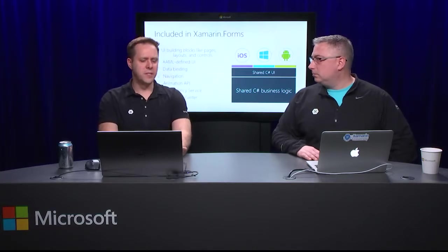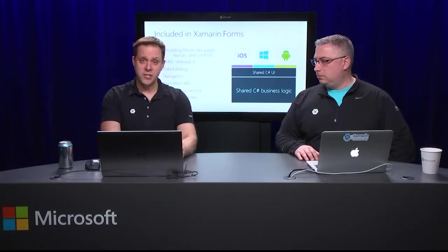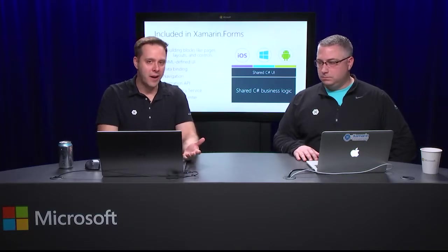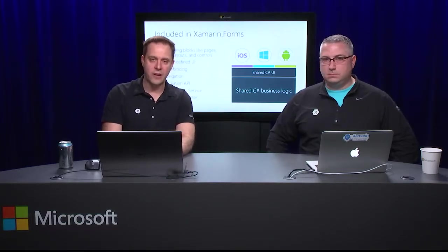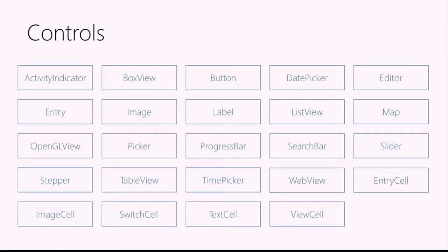XAML gives strong separation of UI definitions from backing logic. It's a language designed for defining UI — that's why we see it in so many Microsoft products. It's a real advantage to have this for both iOS and Android applications and for cross-platform definitions. Xamarin.Forms has lots of basic building blocks: buttons, labels, sliders — all the basic UI pieces — giving flexibility to build business-level and even complex applications. Xamarin University is a great place to learn more complex UI strategies with Xamarin.Forms.